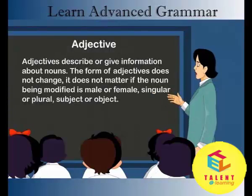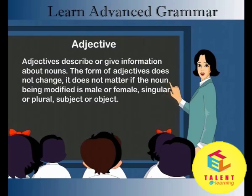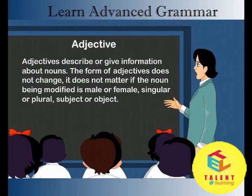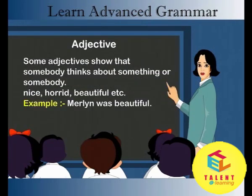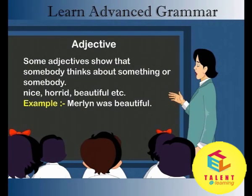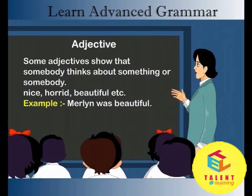Adjective. Adjectives describe or give information about nouns. The form of adjectives does not change. It does not matter if the noun being modified is male or female, singular or plural, subject or object. Some adjectives show that somebody thinks about something or somebody: nice, horrid, beautiful, etc. Example: Merlin was beautiful.